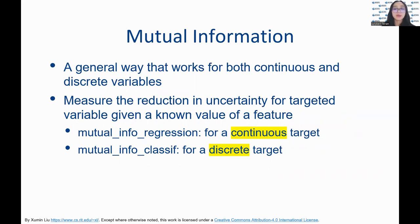Here, we highlight a general feature selection method that works for both continuous and discrete variables. The mutual_info_regression method is suitable for a prediction task where non-negative continuous features are used to predict a non-negative continuous variable. Whereas mutual_info_classif is a function suitable for a prediction task where non-negative continuous features are used to predict a non-negative discrete value.